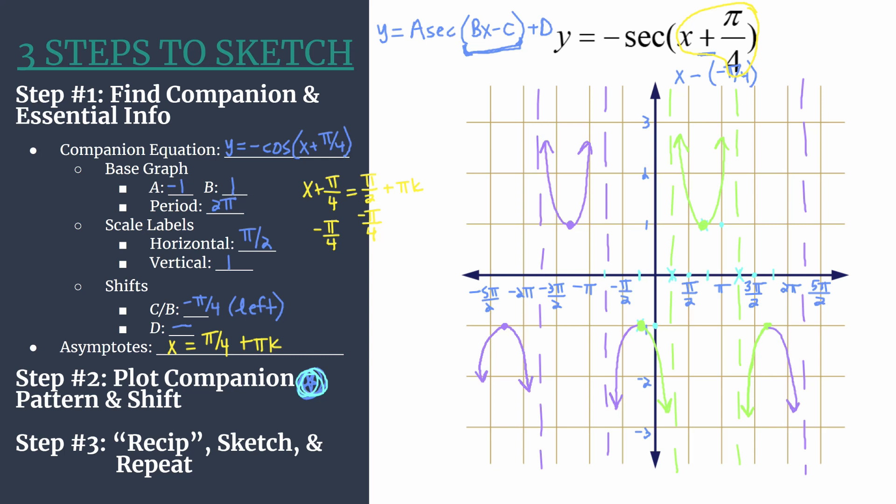You have several nice cycles here. About two and a half cycles of y equals negative secant x plus pi over 4. And, of course, you could keep going for as long as you want.